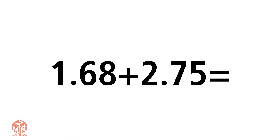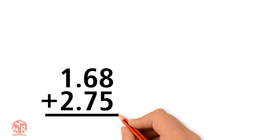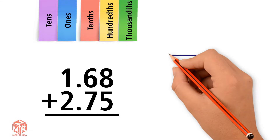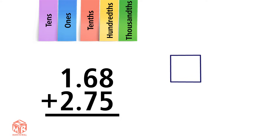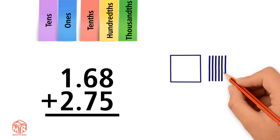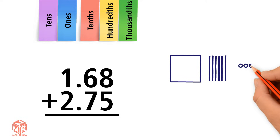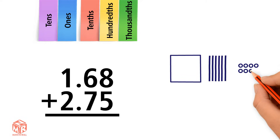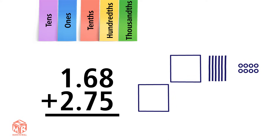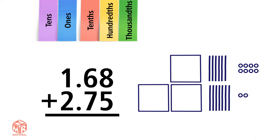Let's do another example: 1.68 plus 2.75. We start by lining up the decimal points. Let's draw it out. 1.68 has one one, six tenths, and eight hundredths. 2.75 has two ones, seven tenths, and five hundredths.